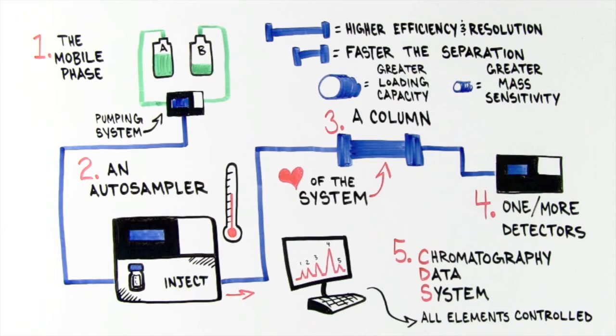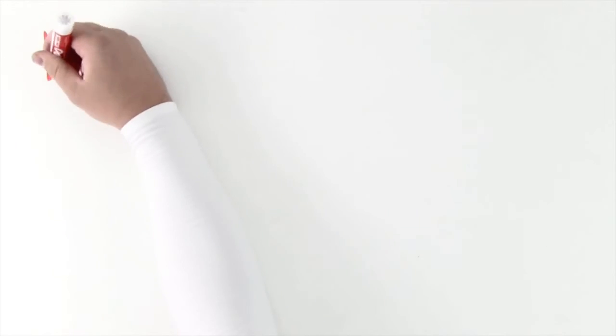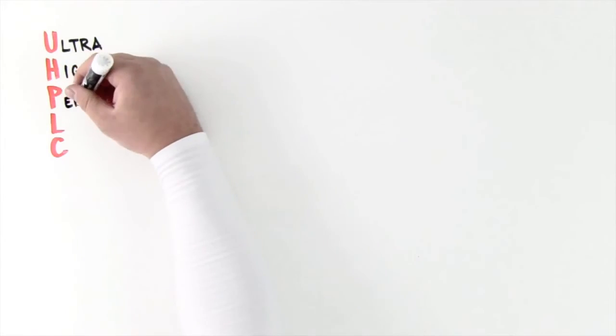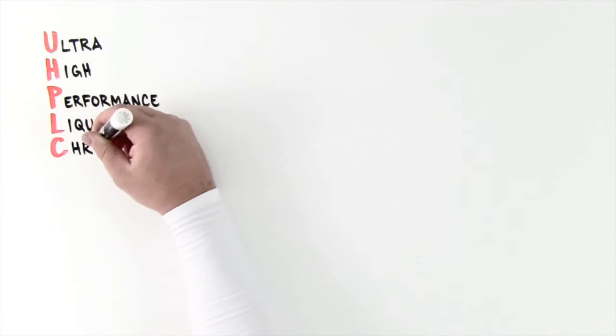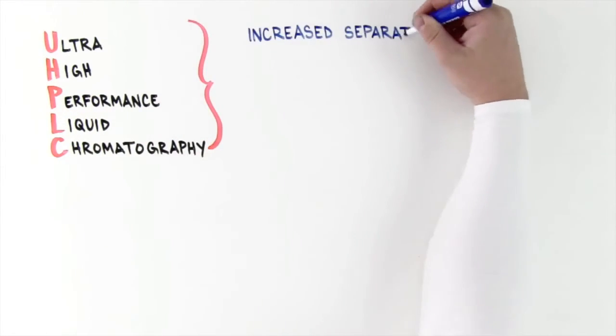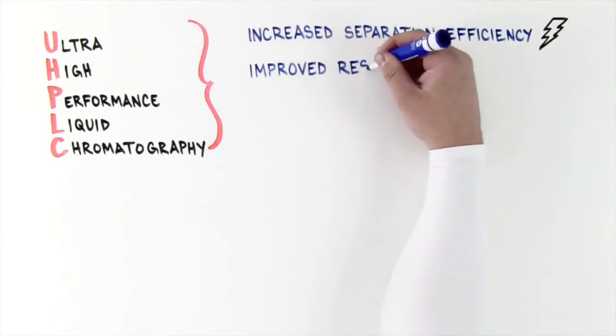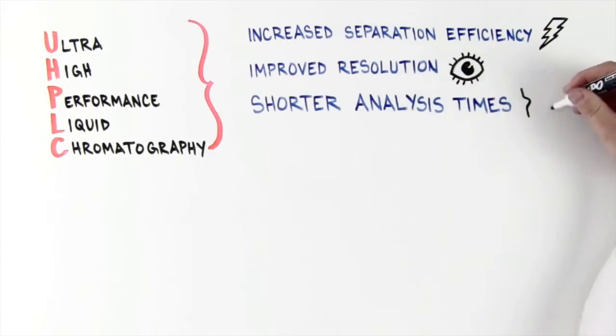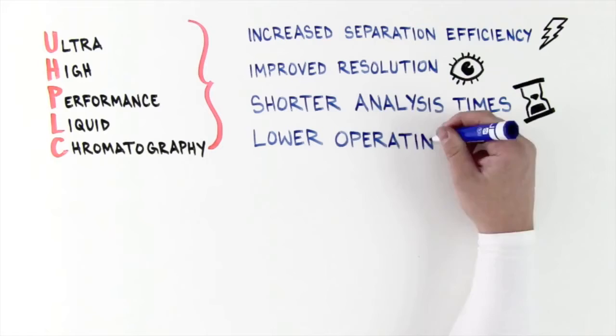What is UHPLC? UHPLC, or Ultra High Performance Liquid Chromatography, is a technique that can achieve increased separation efficiency, improved resolution, shorter analysis times, and lower operating costs.